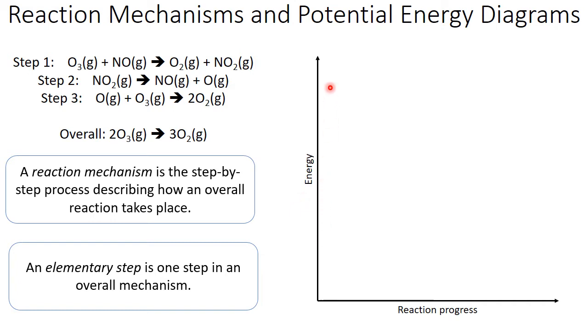A potential energy diagram has a vertical axis of energy. So the higher you are on this axis, the higher in energy the system is at that point in time. And our horizontal axis is reaction progress.